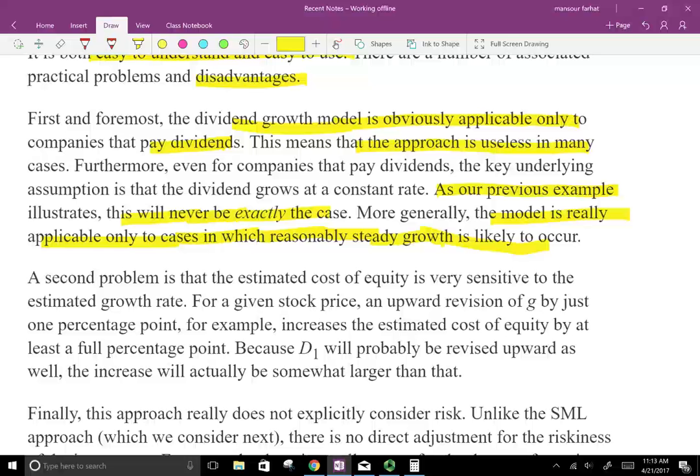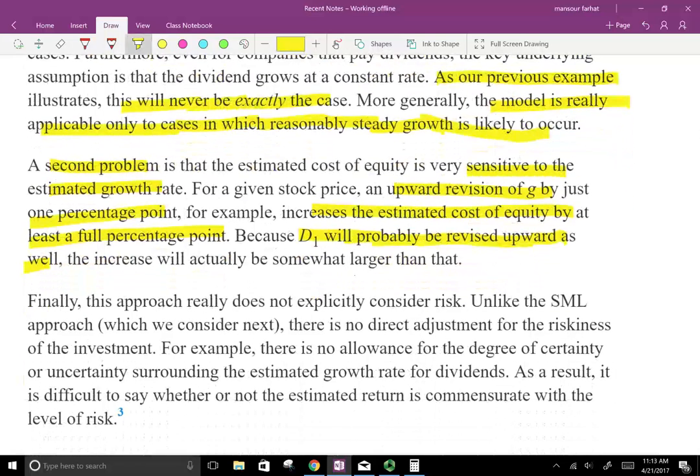The second problem is that the estimated cost of equity is very sensitive to the estimated growth rate. For a given stock, an upward revision of G by just 1% increases the estimated cost of equity by at least a full percentage point. So G is just an estimate. Because D1 will probably be revised upward as well, if G increases, the future dividend will also increase. And finally, this approach does not explicitly consider risk. As we saw from the SML approach, which we're going to see next, there's no direct adjustment for the riskiness of the investment. The riskier the investment, the higher should be the cost of equity. For example, there is no allowance for the degree of uncertainty surrounding the estimated growth rate of dividends.